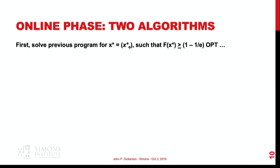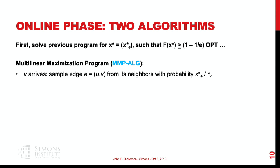Solving the offline program gives us a probability distribution x-star. We can solve this in polynomial time within (1 - 1/e) of OPT. We then design two simple online algorithms that use x-star during the online phase. The first is a multilinear maximization-based program, MMP-aug. When v arrives, we look at the safe edges between v and any unmatched u on the offline side.